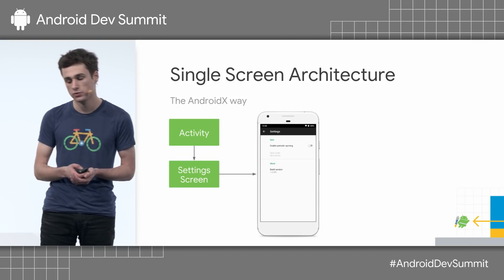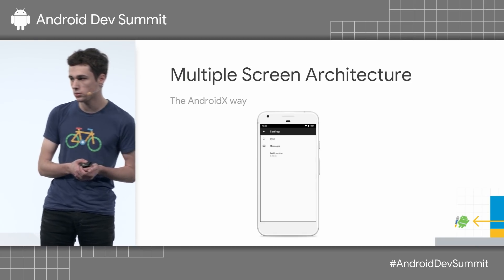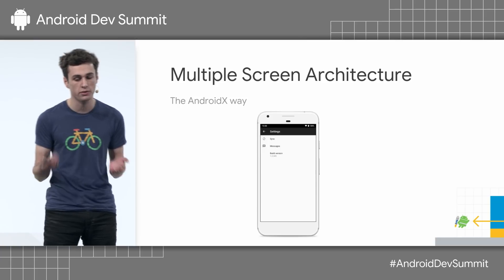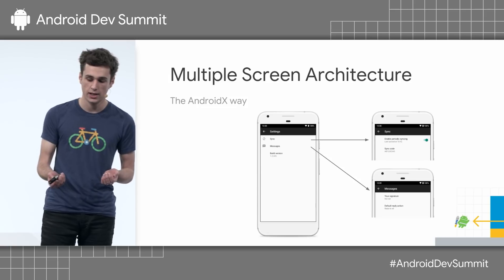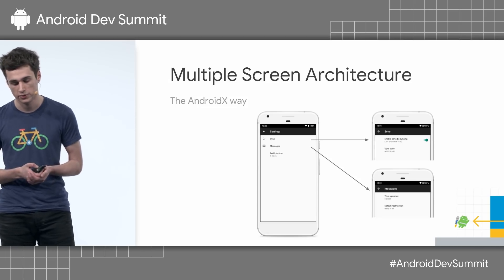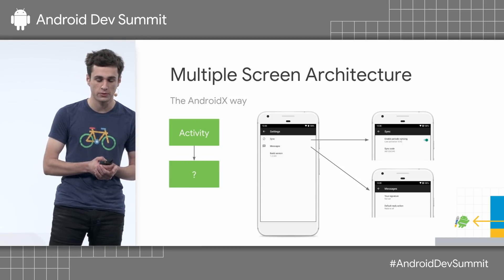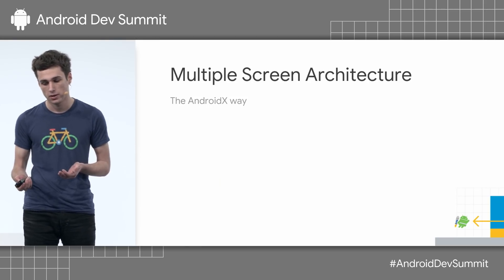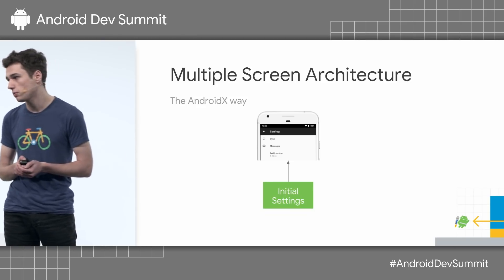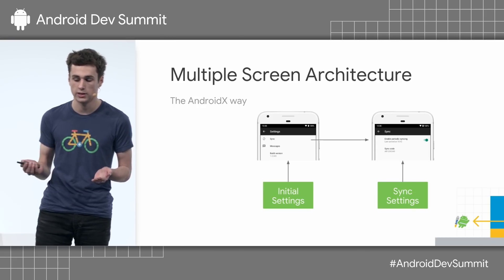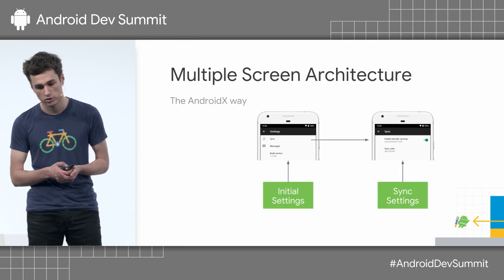But what if our hierarchy looks something like this? Now on our first screen, we have links to other screens. So 'sync' will link to a screen of sync-related preferences, and 'messages' will link to some more specific messages-related preferences. It's actually very simple relative to what we've done previously with a single screen. The initial settings screen will just be, as before, a PreferenceFragmentCompat with a hierarchy. And then the sync settings screen will also be a PreferenceFragmentCompat with its own hierarchy, and so on for any other screens you may have.